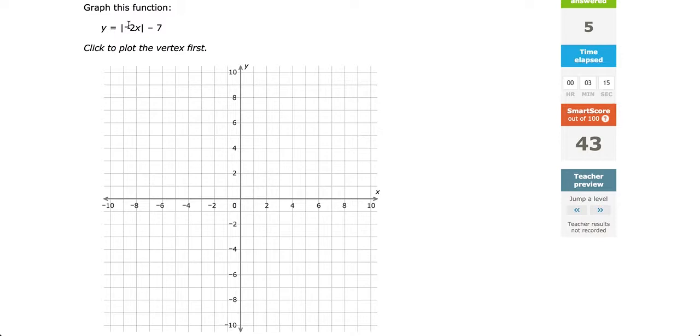Glad this example came up because it has a negative on the inside of the absolute value as a coefficient of x. Let's start with this negative 7 though. This minus 7 tells us to shift downward 7 units. That is our starting point, our vertex.